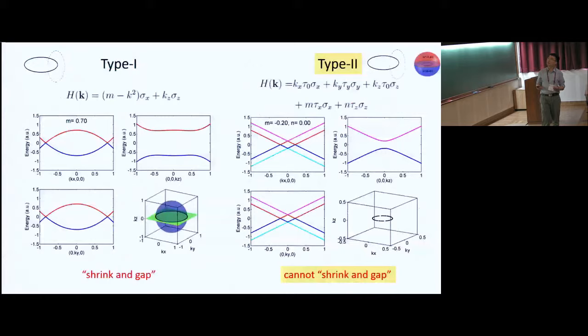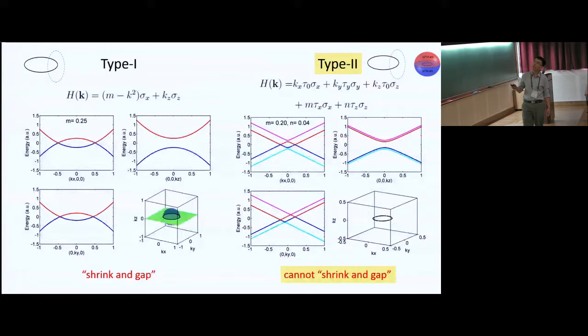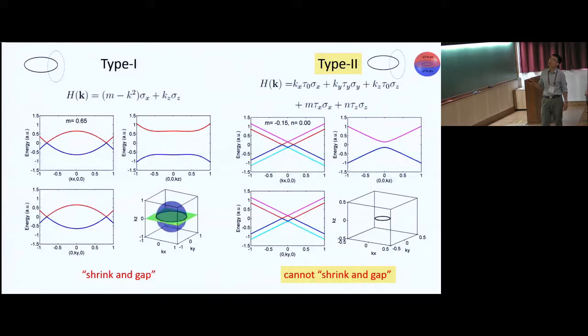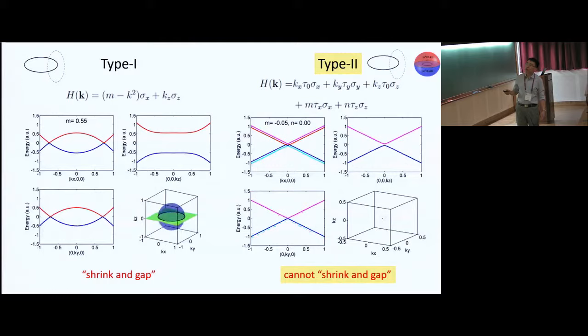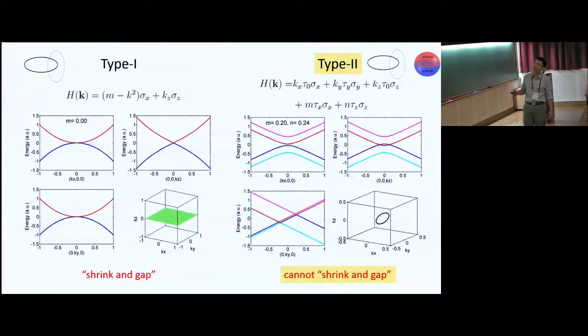And here, these are the Hamiltonians, and I'm playing with these coefficients, and it's displayed in these figures. So for type 1 nodal line, by continuously changing this M parameter, you'll be able to shrink this nodal line in momentum space to a single point. And then if you go further, the two bands will no longer touch each other.